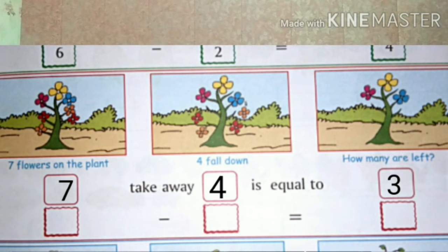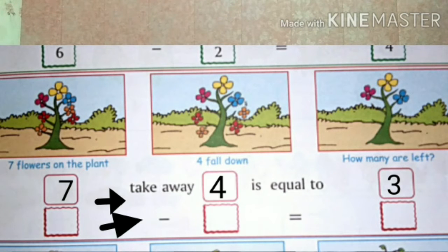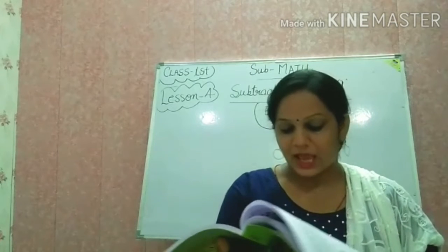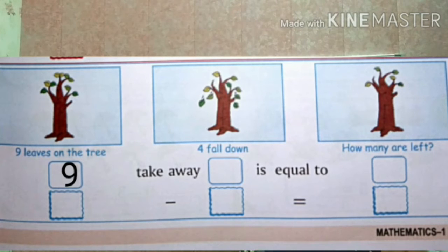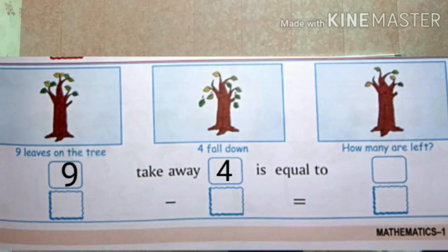Okay, so aap dono tarah se kar sakte hain — chahen toh take away likhein, is equal to likhein, ya minus ka symbol lagayein. Neeche bhi hum same method likhenge. Next — Nine leaves on the tree. Pattiyaan hain tree par, toh yahan par hum nine write karenge. Take away — four fall down, toh yahan four likhenge kyunki chaar pattiyaan gir gayi. How many are left? 1, 2, 3, 4, 5 — so write here: Five. Same method neeche bhi write karenge.